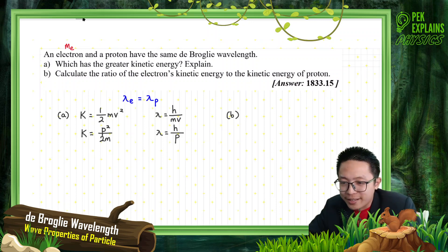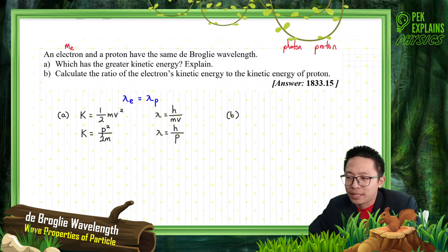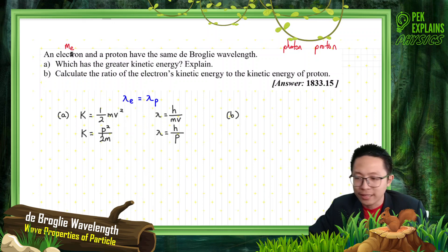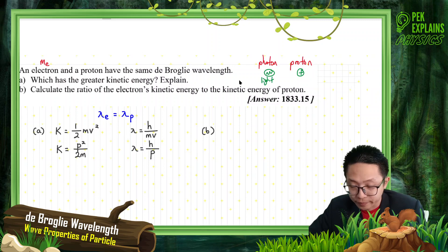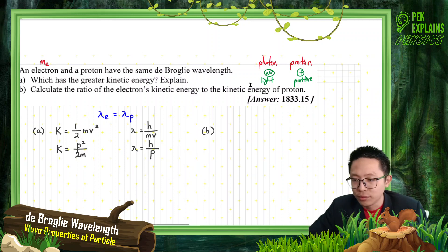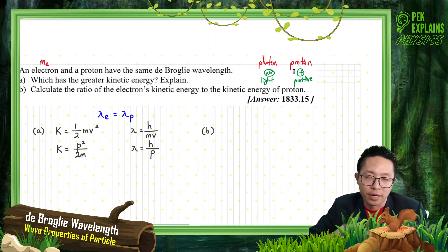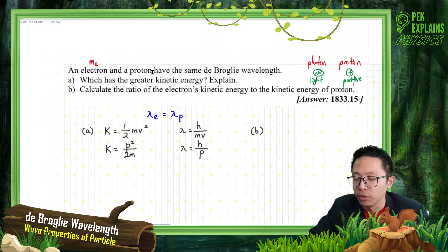Remember the difference between photon and proton — many students mix up these two. Photon is the light particle. Proton is the positive charge. Photon and proton differ by only one letter: the H and the R. So be careful — this is photon, this is proton. The question is about proton, not photon.